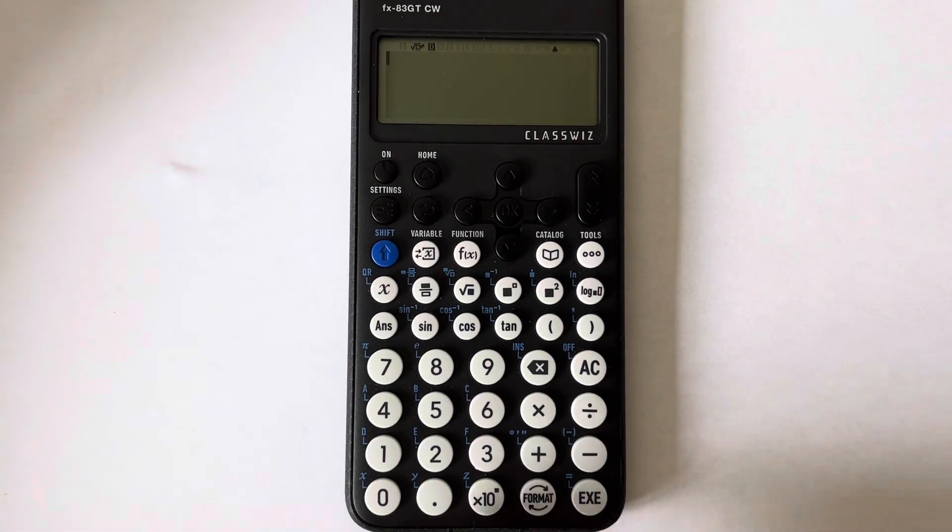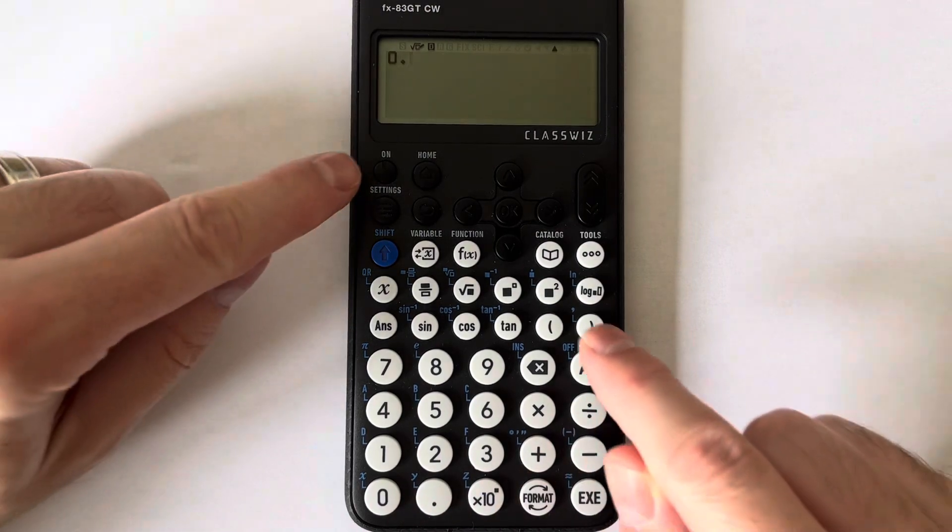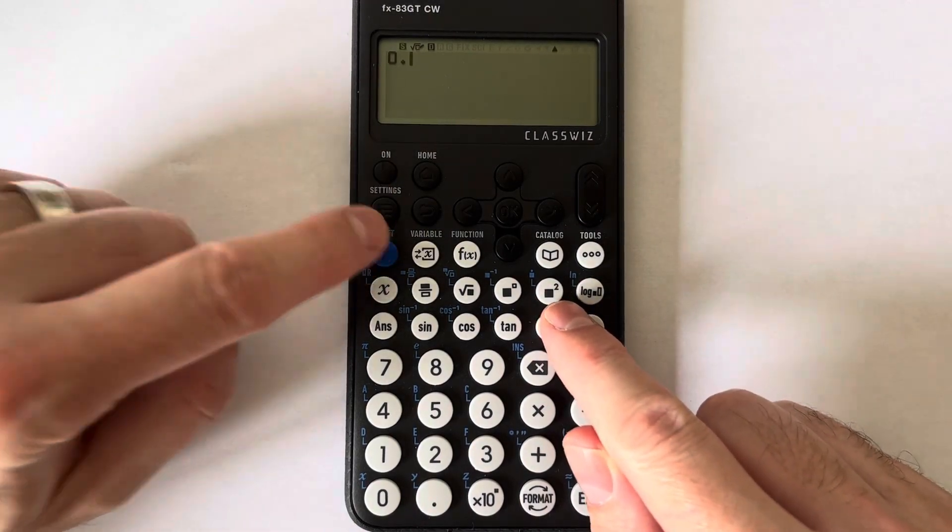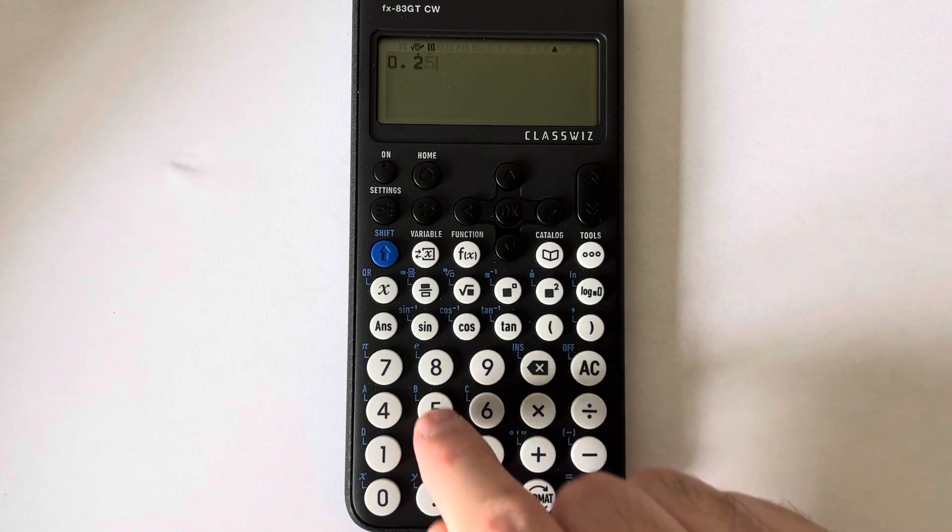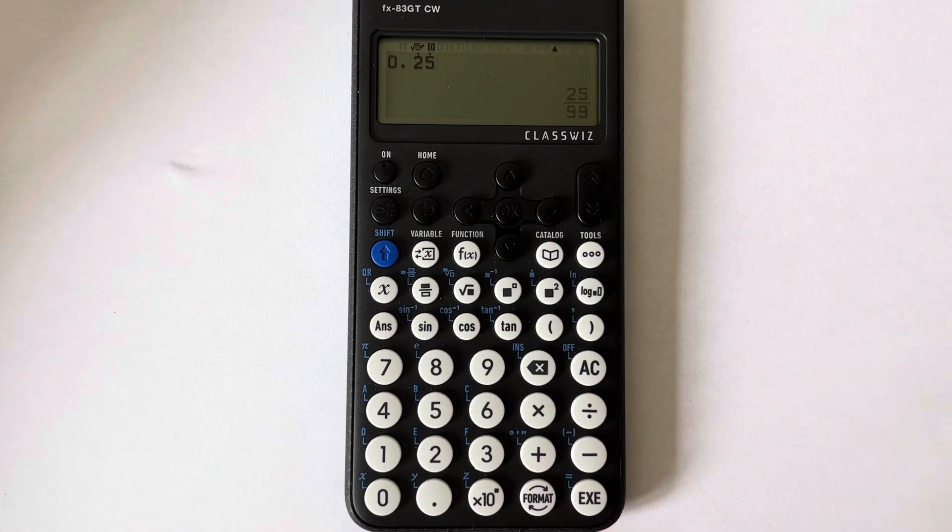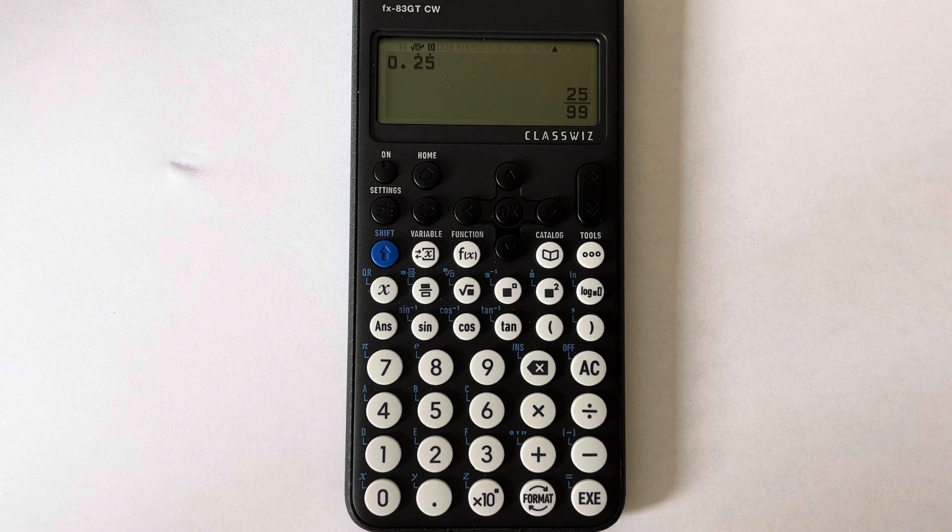If we press zero point, and then press shift, squared key, and then the two and the five, press equals, and we get the answer 25 ninety-ninths.